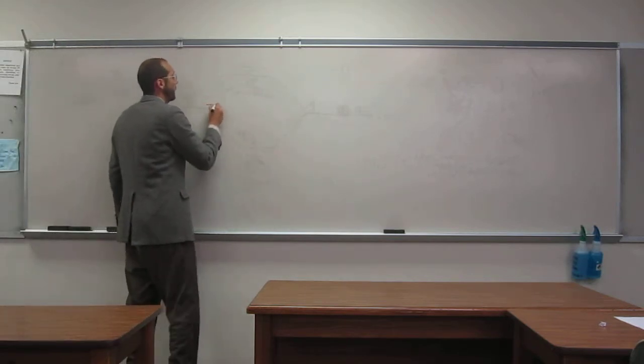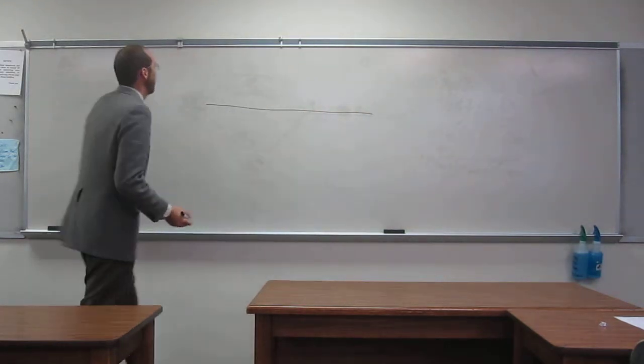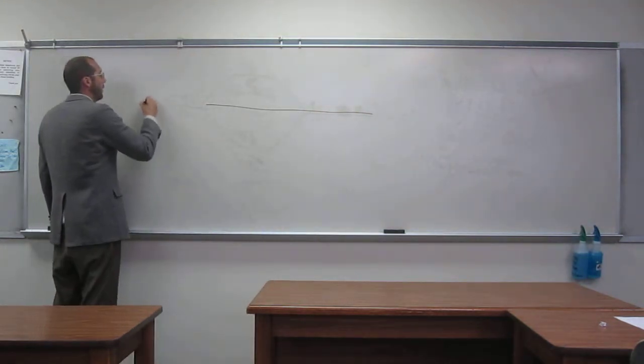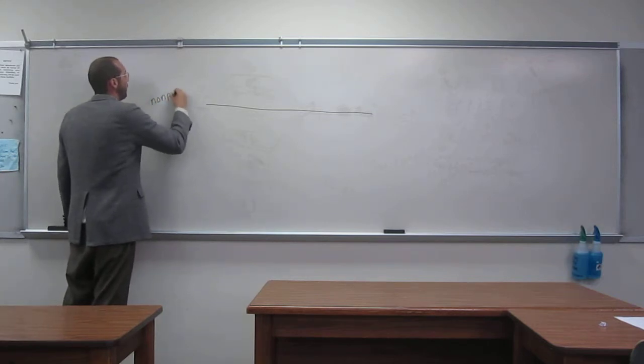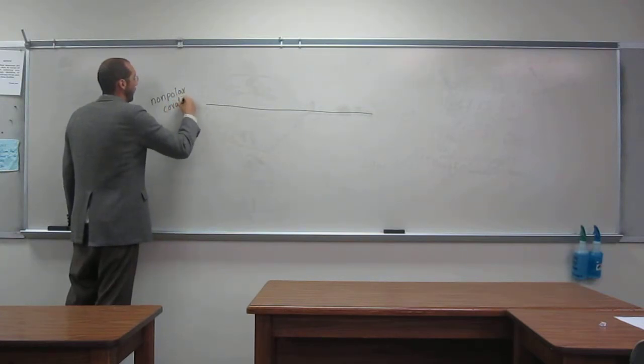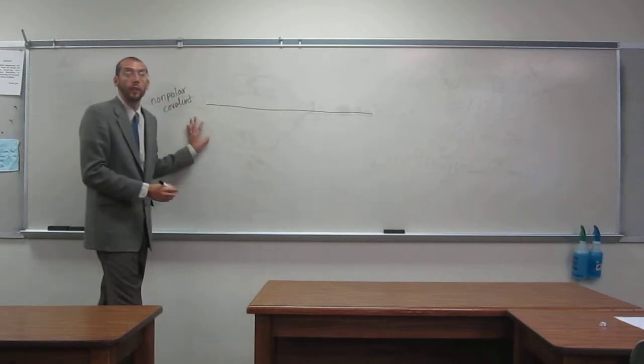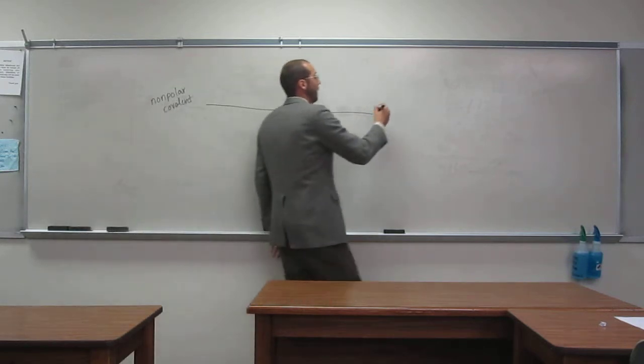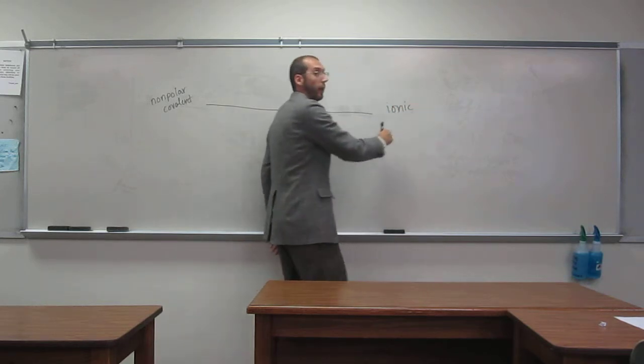So if we have the spectrum, we're going to write a bonding spectrum. Over here on one hand is nonpolar covalent, so no electronegativity difference, and here we have ionic, so really ionic.